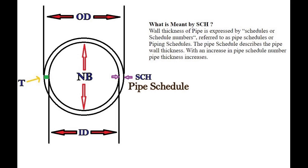The wall thickness of a pipe is expressed by schedules or schedule numbers, referred to as pipe schedules. The pipe schedule describes the pipe wall thickness. With an increase in the pipe schedule number, pipe thickness is increased.